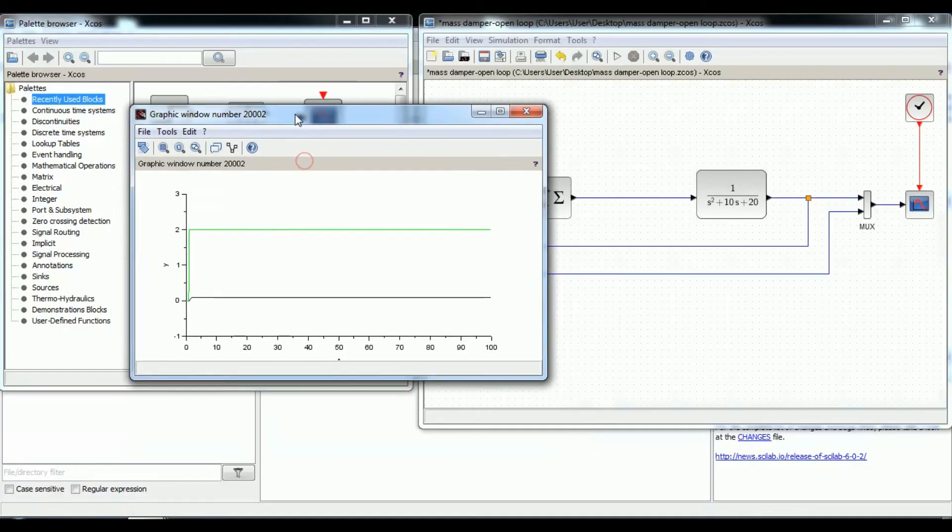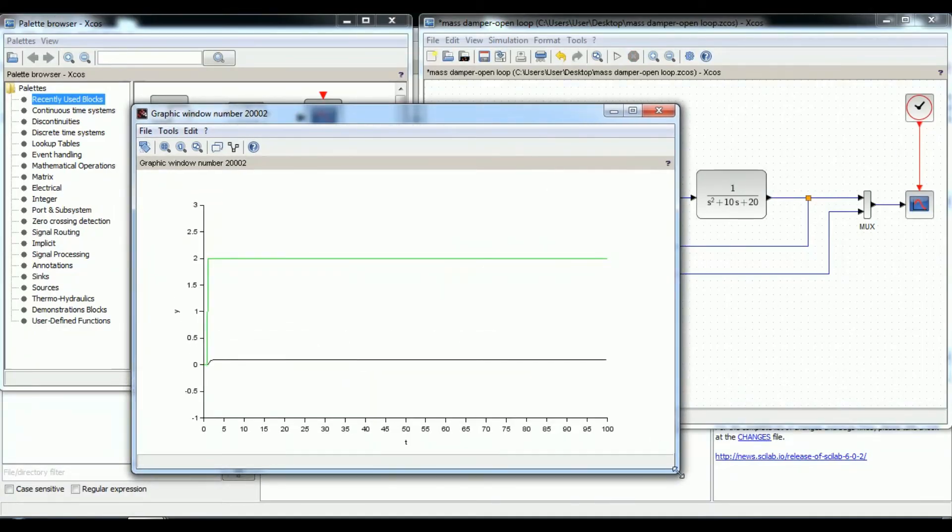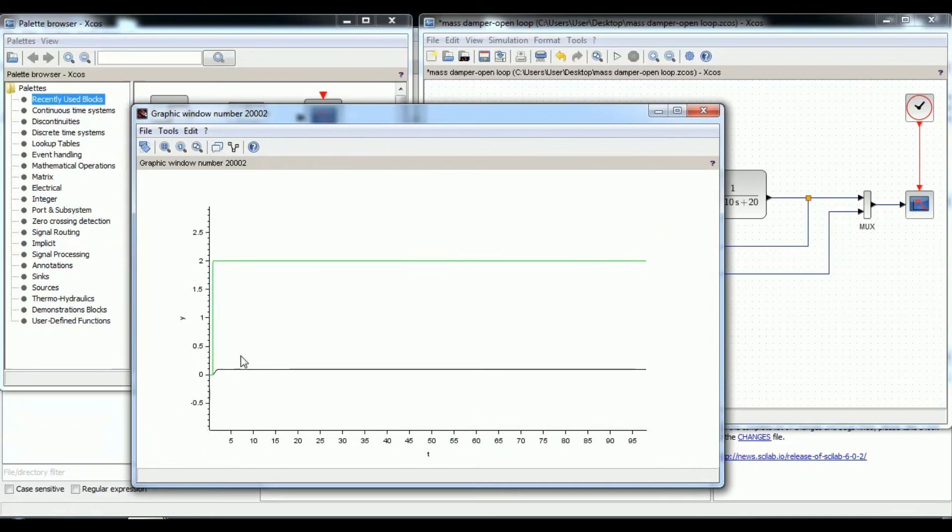Green color indicates the step size which we have selected 2 and this is the response curve which is in black color.